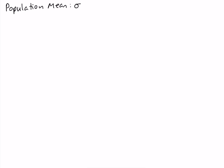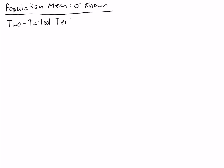We're going to do hypothesis tests about the population mean when the population standard deviation sigma is known. We're going to be looking at two-tailed tests. The null hypothesis is that the population mean mu is equal to mu naught, and the alternative is that the population mean is not equal to mu naught.